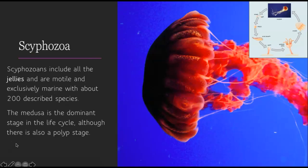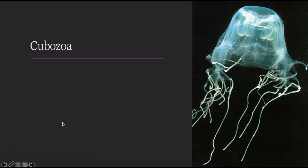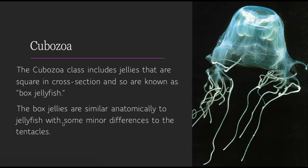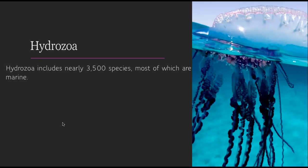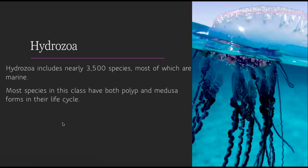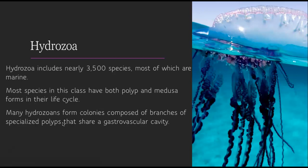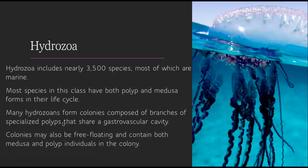The scyphozoa include all the jellyfish. They're motile, exclusively marine, with 200 described species. The medusa is the dominant stage in the life cycle, but there is a polyp stage at some point. Then the cubozoa, or box jellies, are similar to jellyfish with minor differences in the tentacles, and they are square in cross-section — cube sounds like square, that's how you remember it. Then hydrozoans: nearly 3,500 species, mostly marine. Most species have both polyp and medusa forms. Many form colonies of branches of polyps sharing one gastrovascular cavity, and colonies might be free-floating containing both medusa and polyp individuals. These include the Portuguese man-of-war, fire coral, and hydra.